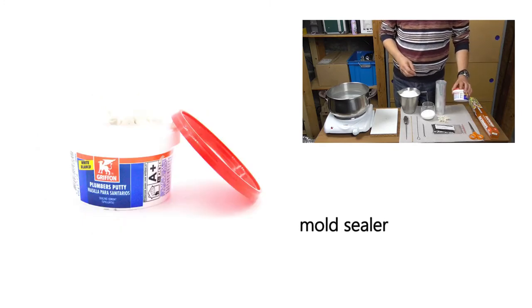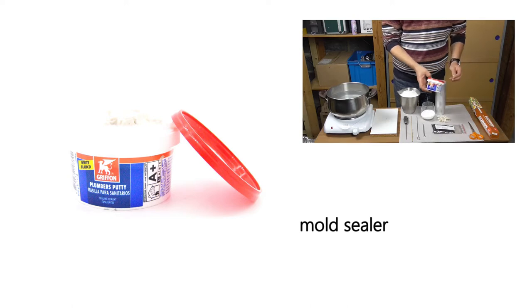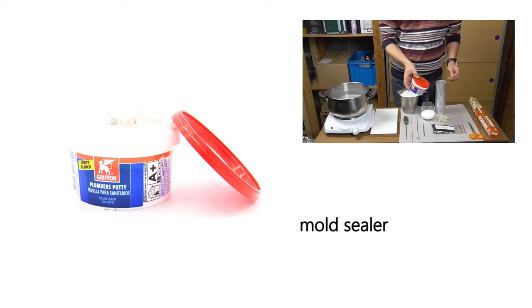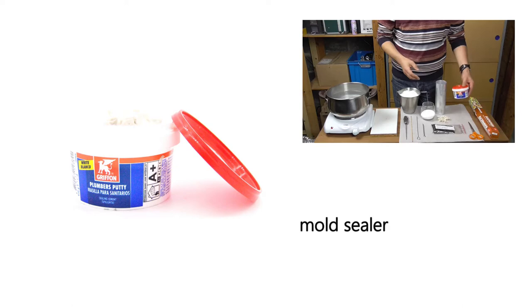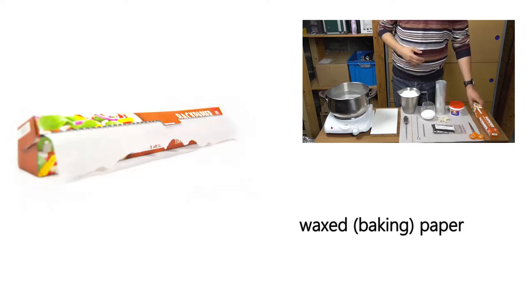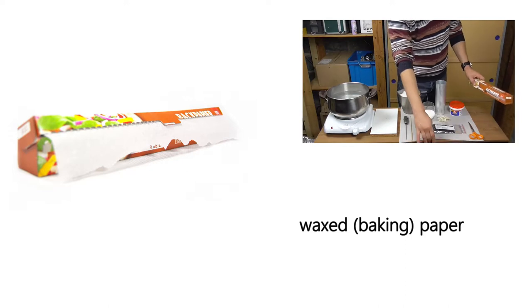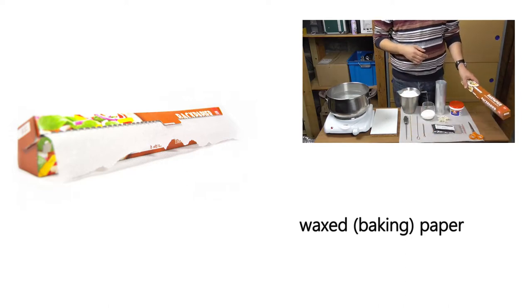Mold sealer or plumber's putty, to prevent the liquid paraffin wax from escaping the mold when poured. Your work area will be covered with wax paper, like here, to catch any accidental wax spill.